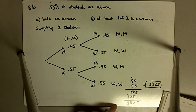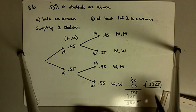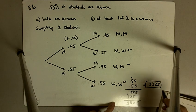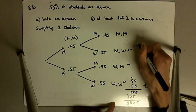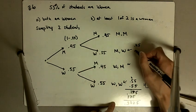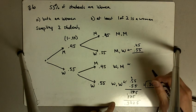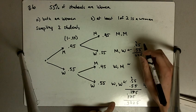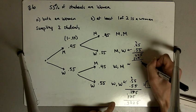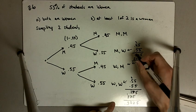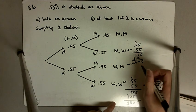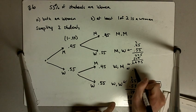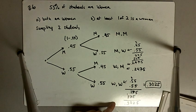And the probability that at least one of the two students is a woman will be satisfied by this case, this case, and this case. So, we have to do 0.45 times 0.55, and that's going to be 0.2475. And because this is now 0.55 times 0.45, that will also be 0.2475. So, let me just clean this up a little bit.